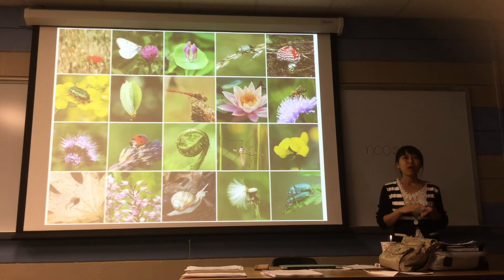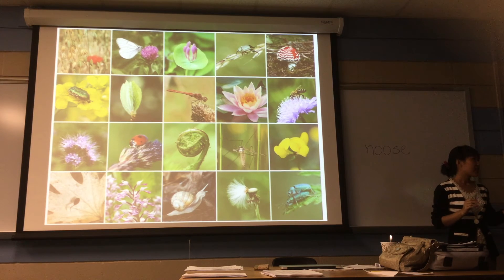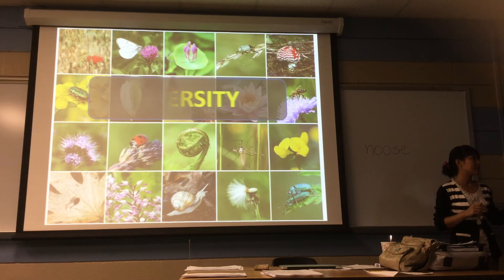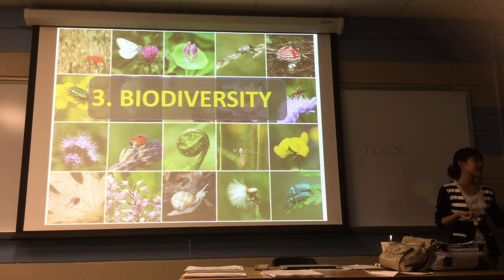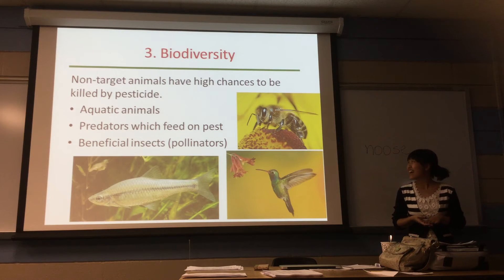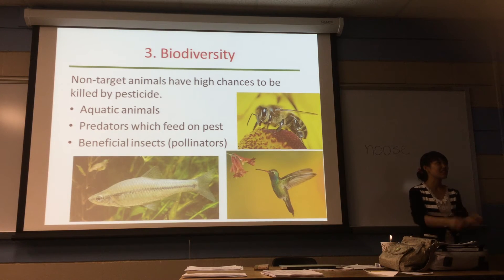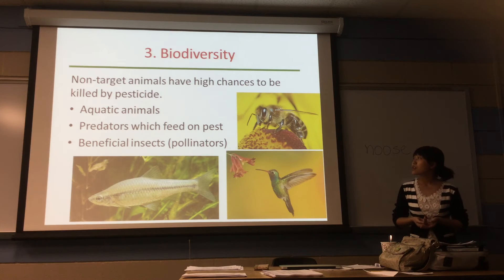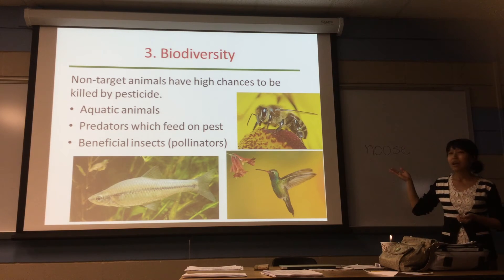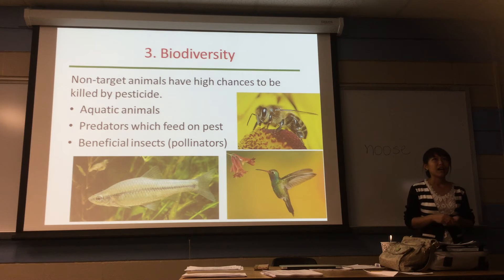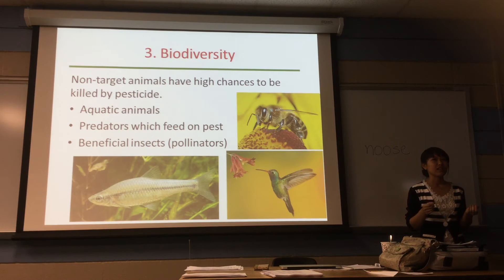The pesticides also pose threats on soil and water. And another thing is it can put biodiversity in danger. The pesticides are designed to kill harmful insects. But unfortunately, some non-target animals have a high chance to be killed by pesticides too. A lot of non-target animals — they are bees, honeybees. It can also harm fish and animals before the pesticides run off through the waterway to the river and contaminate the water and threaten the aquatic animals too.